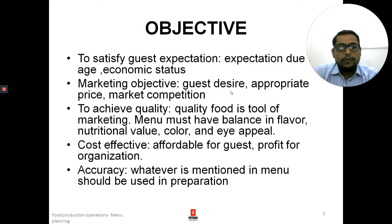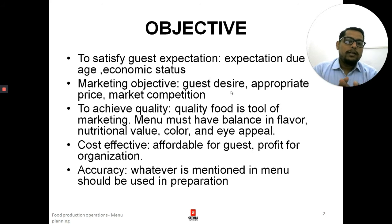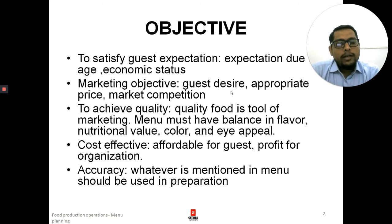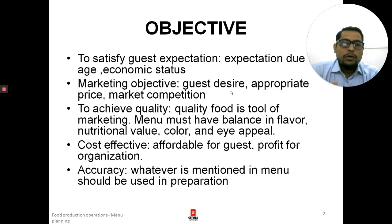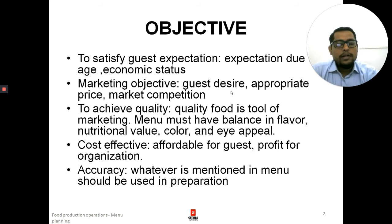Next is accuracy. Accuracy means whatever is mentioned in the menu should actually be there in the dish. There are small descriptions given under each dish, and they should match what is served. For example, if you say the chicken is tempered with capsicums and onions with masala sprinkled, and guests don't find it, you will leave a bad impression. The food should be accurate as per the menu, and this will generate goodwill in the market.